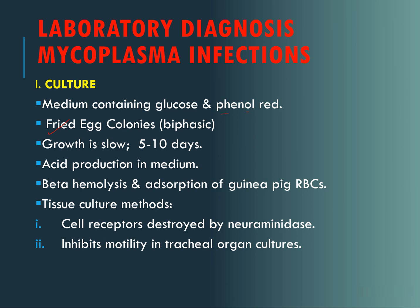The colonies are beta-hemolytic and can show adsorption of guinea pig RBCs. In tissue culture methods, when mycoplasma are cultivated, cell receptors are destroyed by neuraminidase and they also inhibit motility in tracheal organ cultures.